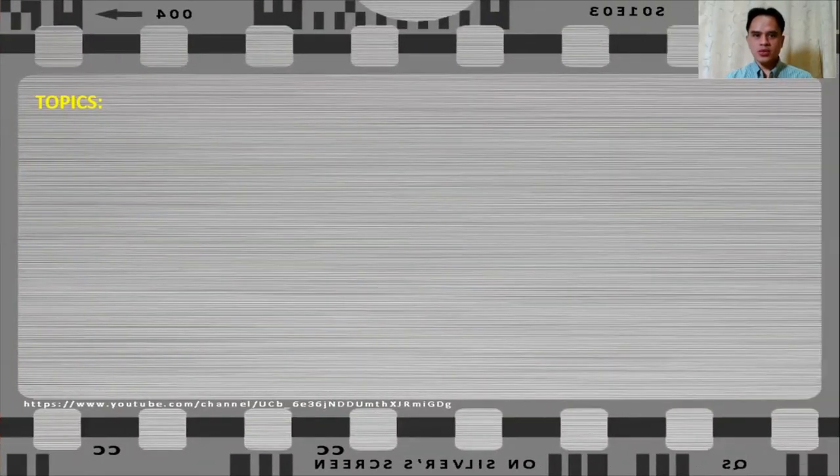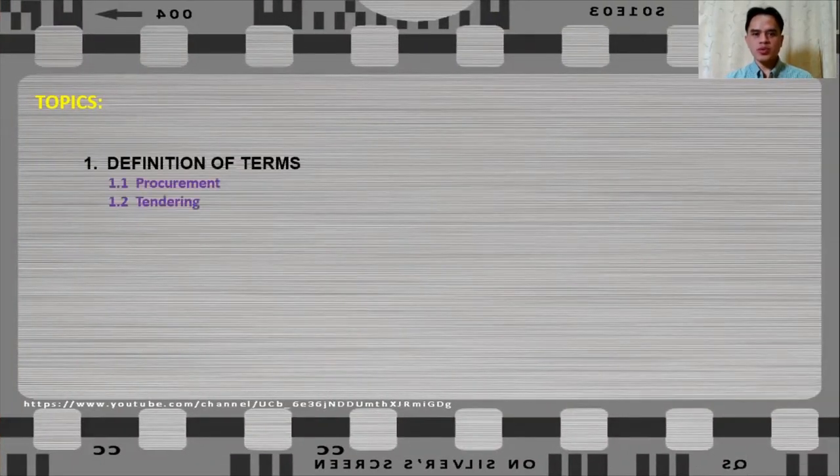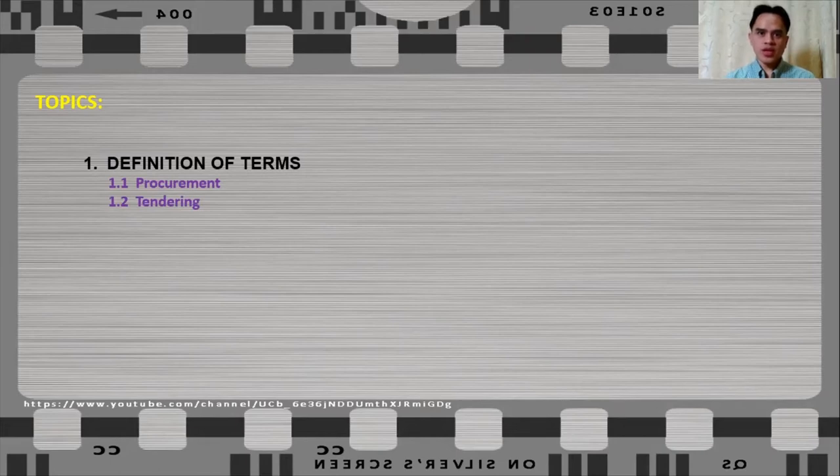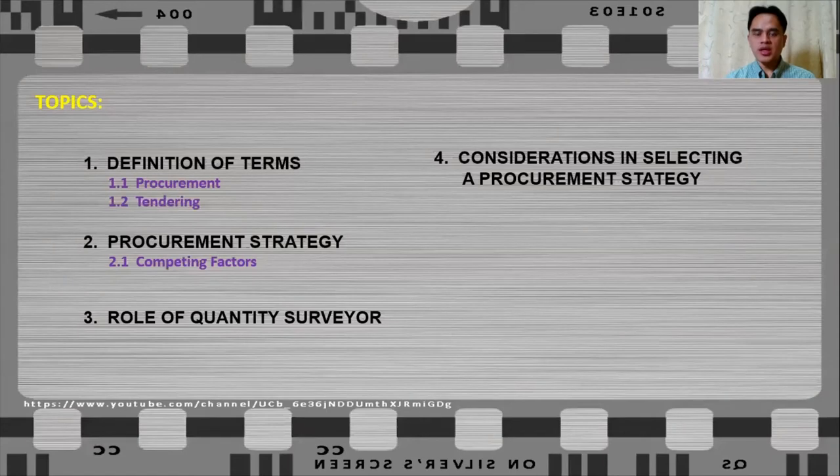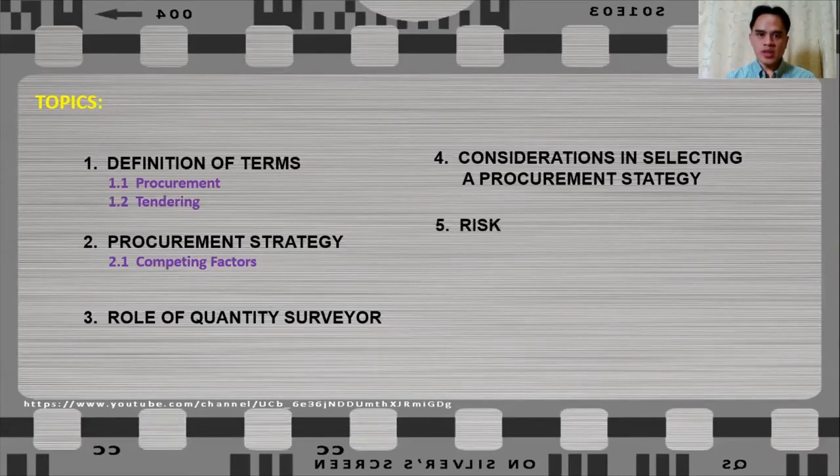In this video, we are going to differentiate procurement from tendering because oftentimes these two terms are being used interchangeably without giving thought on the actual meaning of these terms. We will also talk about the procurement strategy and the competing factors that may affect the development of procurement strategy. We will tackle the role of quantity surveyors, as well as the considerations in selecting a procurement strategy, and talk a little bit about risks and the different procurement routes.